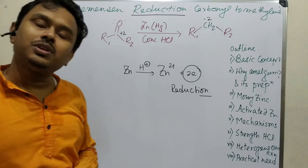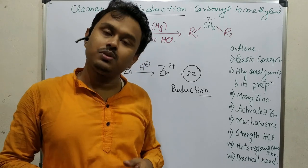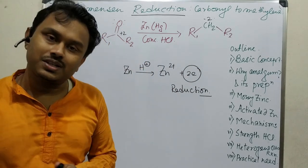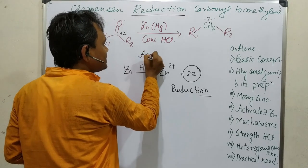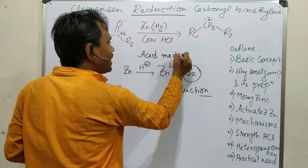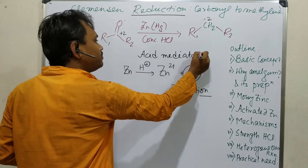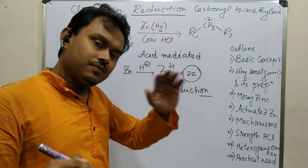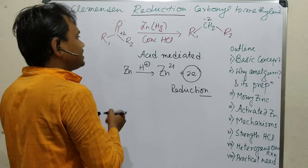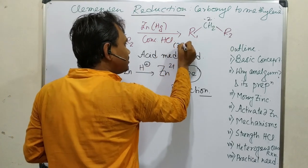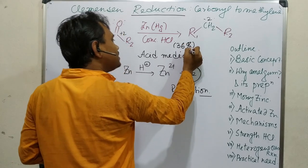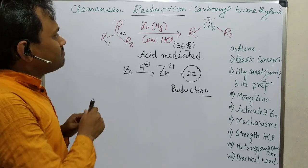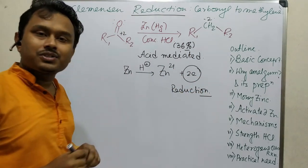The carbonyl group is a very important synthetic intermediate. If you need to reduce it to the corresponding methylene, you can use this reaction. This reaction is mainly acid-mediated. If you want to perform this reaction in the presence of a base, you may follow the Wolff-Kishner reduction, which is a hydrazine reduction — I shall explain that in the next video. In this case we use concentrated HCl, which is around 36% HCl.